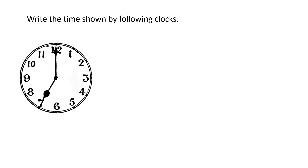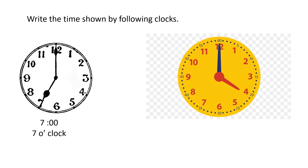Now let's do some examples. Write the time shown by the following clocks. In the first clock, the hour hand is at 7 and the minute hand is at 12, showing zero minutes. So the time is 7:00, or seven o'clock. In the second clock, the minute hand is at 12, showing zero minutes, and the hour hand is at 4, so the time is 4:00, or four o'clock.